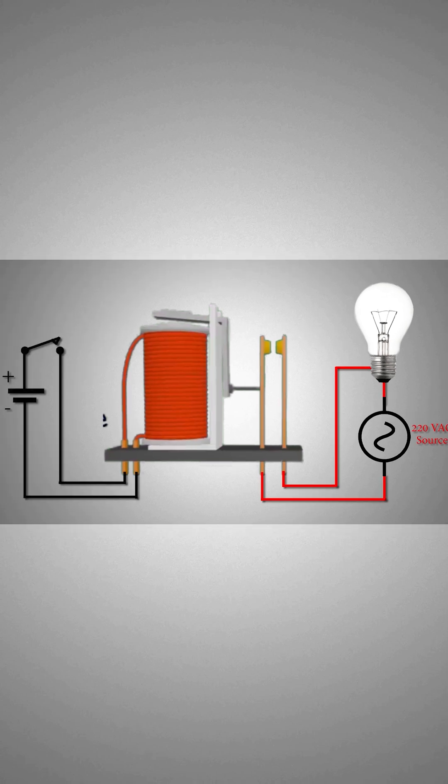Relay coil is connected to a DC voltage source through a push button. When this push button is pressed, it applies the voltage to the relay coil. The relay coil gets energized and becomes an electromagnet.